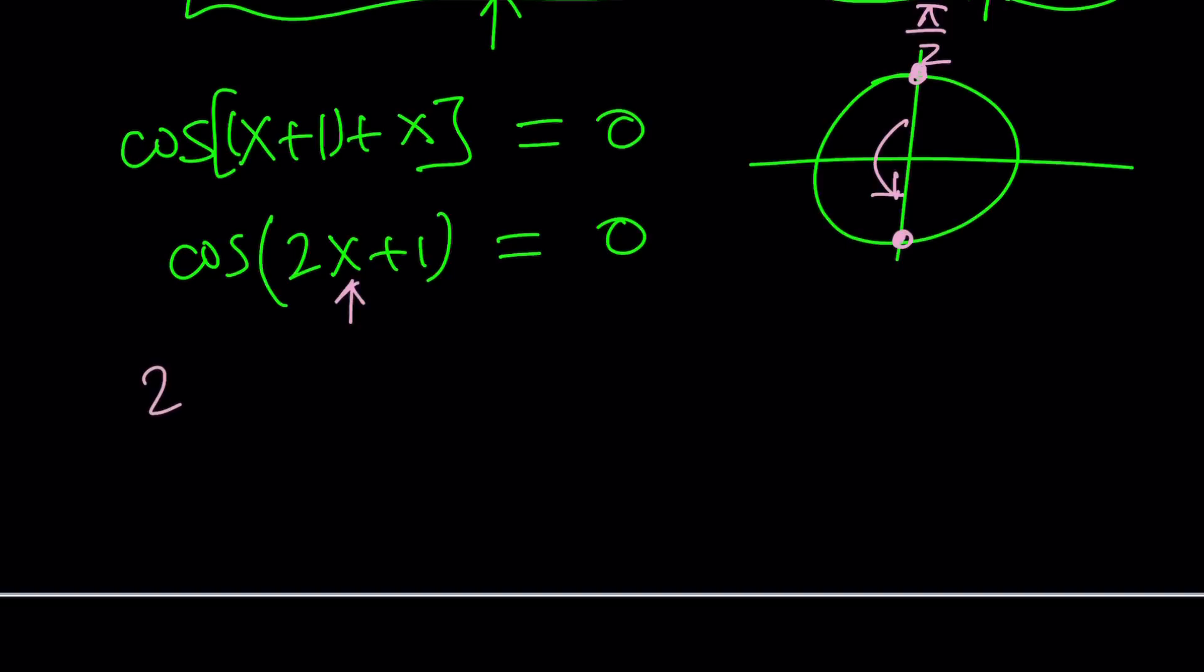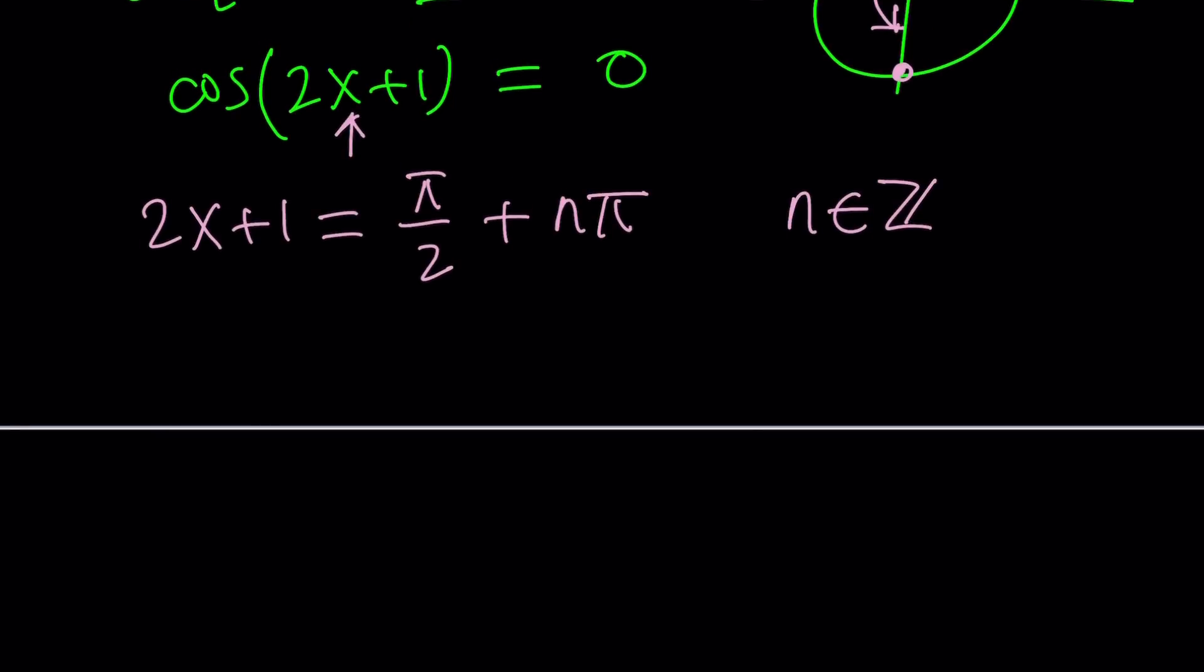Now, we can safely say that 2x plus 1, whose cosine is 0, can equal pi over 2 plus n pi. Notice, our period is pi, so I have to add multiples of pi. Not multiples of 2 pi. Instead of writing two separate solutions, I'm just going to stick with 1, which is better. And, of course, our goal is to solve for x.